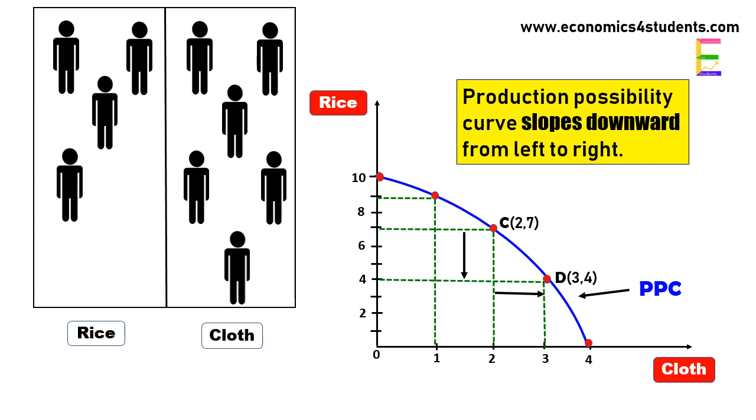Therefore the economy has to sacrifice the production of three units of rice in order to produce one extra unit of cloth, which makes the PPC downward sloping.